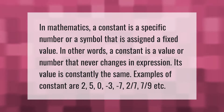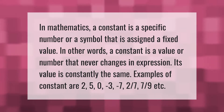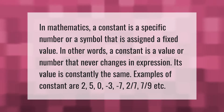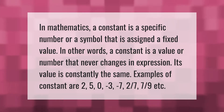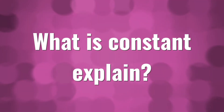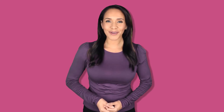In mathematics, a constant is a specific number or a symbol that is assigned a fixed value. In other words, a constant is a value or number that never changes in an expression — its value is constantly the same. Examples of constants are 2, 5, 0, -3, -7, 2/7, 7/9, etc.